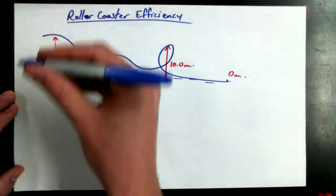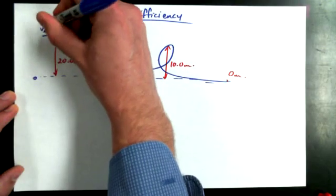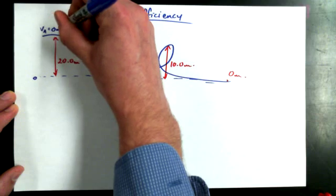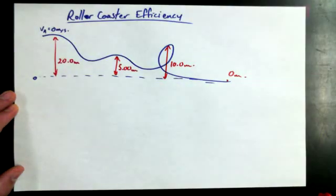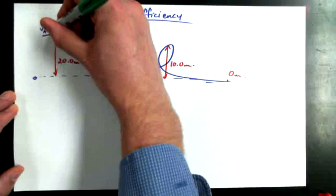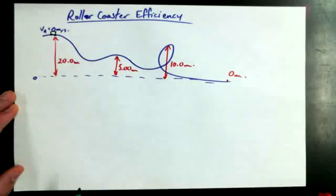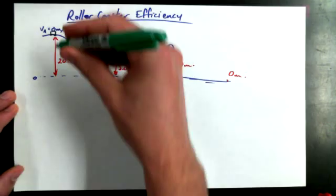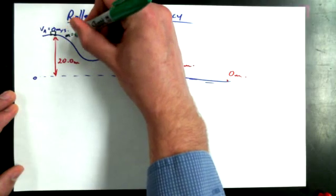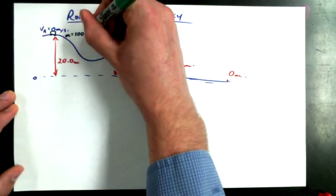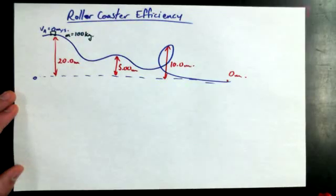And I'm going to say that at the beginning here, velocity A is equal to 0 meters per second. We've done that once before. And we're going to give ourselves a mass for this roller coaster. Let's give ourselves a mass of a nice round number, 100 kilogram mass. Okay, all digits being significant.